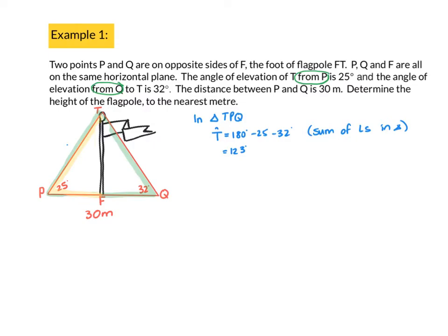So if I want to work out TP, TP over sine of Q is going to equal to 30, or let's call it PQ, out of sine of T. So I'm going to get TP is PQ, 30, out of sine of T, sine of 123, times by sine of Q, which is going to give me sine of Q is sine of 32. And when I type that into my calculator, I get that TP is 18.9556 and so on meters. Now I don't round off now because I want to get an accurate answer at the end. So 18.9556 meters.